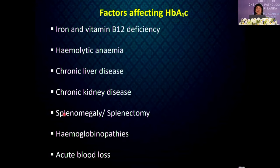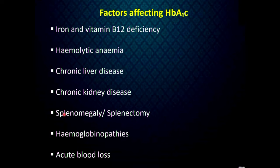Various factors affect HbA1c results because the test depends on the normal lifespan of red cells. In iron deficiency anaemia, results are falsely high due to a larger proportion of old red cells. In haemolytic anaemia, red cell lifespan is reduced and results are falsely low due to a higher proportion of new red cells. In acute blood loss, values are also low for the same reason.